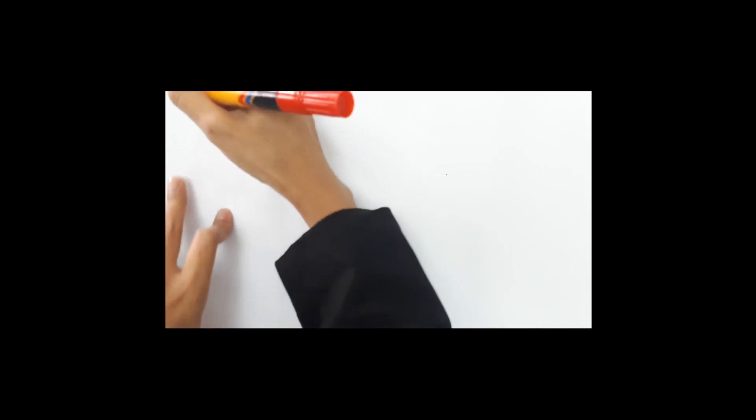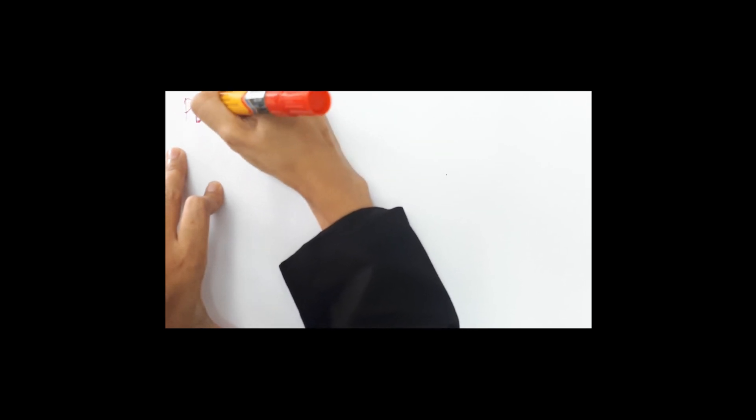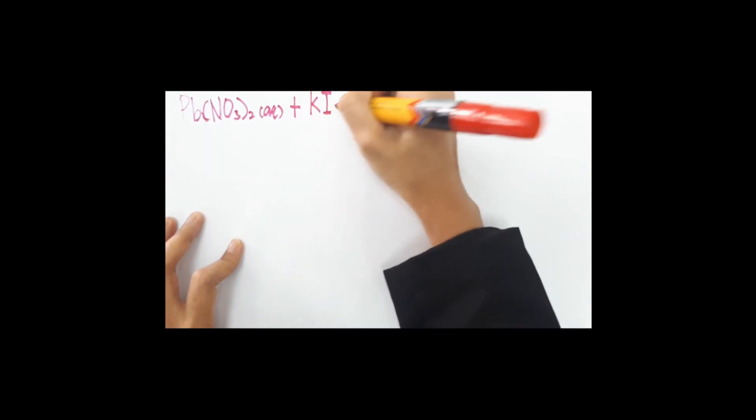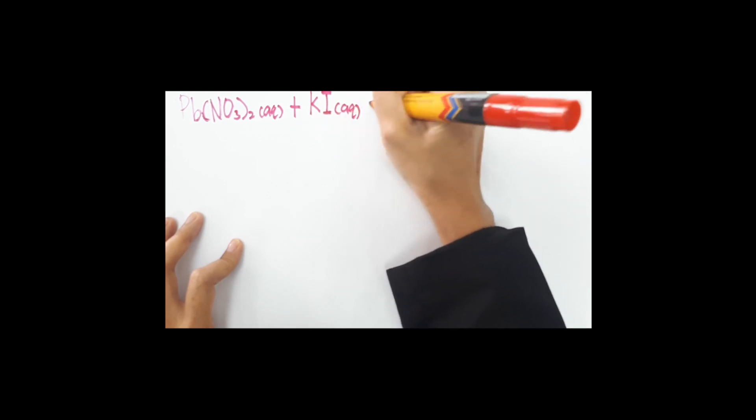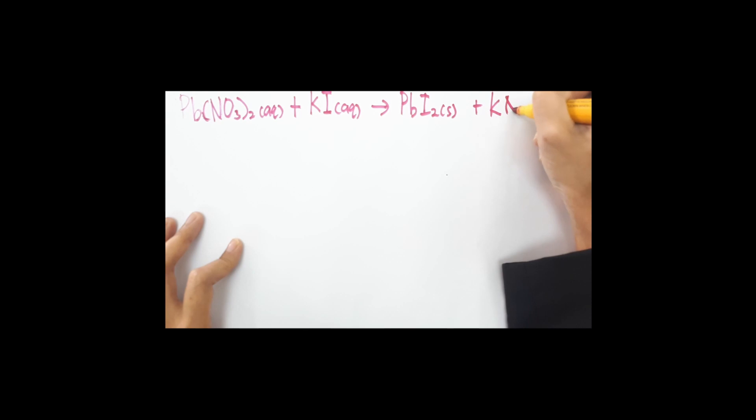Today I'm going to show you how to prepare lead iodide from lead nitrate and potassium iodide. First, we need to write the general equation for the reaction: lead nitrate Pb(NO3)2 reacts with potassium iodide (aqueous) to form the insoluble salt lead iodide (solid) plus potassium nitrate (aqueous).